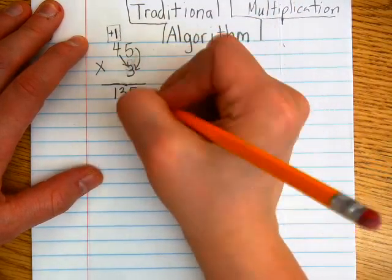And that is the basic idea of the traditional algorithm for two-digit by one-digit multiplication. You multiply, put the numbers where they go, multiply, and then you add to get your answer. So give it a try. All right.